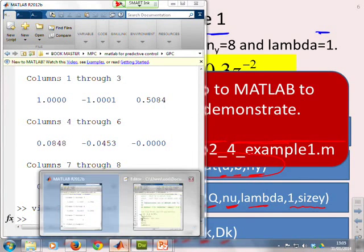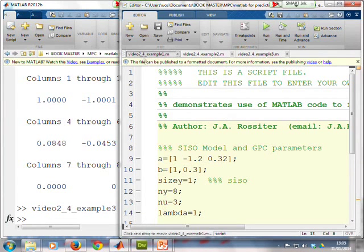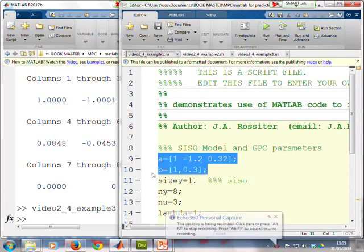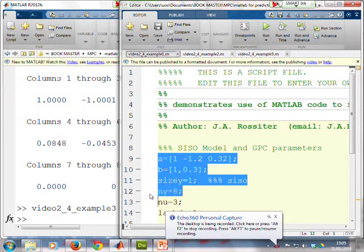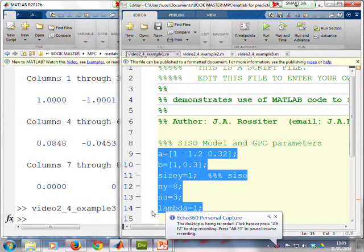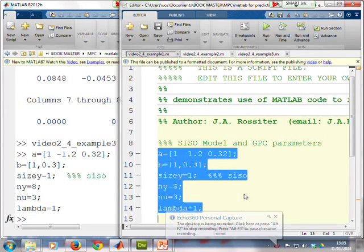So there's our MATLAB window. And if we go to the M file, so you'll see it's here, video2_4_example1. You'll see the first step, enter A, B, size Y, it's one dimension, N_y, N_u, and lambda. So I can just put those in.